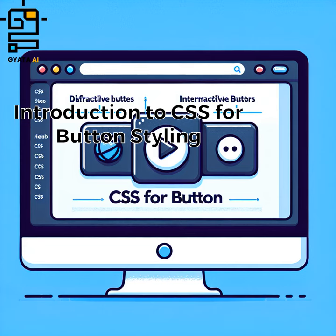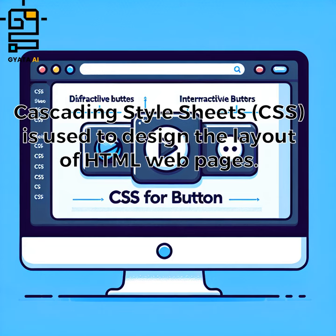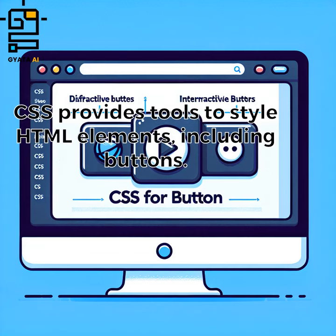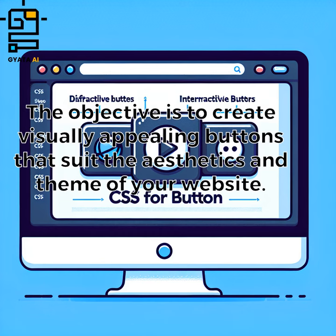Introduction to CSS for button styling. Cascading Style Sheets, CSS, is used to design the layout of HTML web pages. CSS provides tools to style HTML elements including buttons. The objective is to create visually appealing buttons that suit the aesthetics and theme of your website.